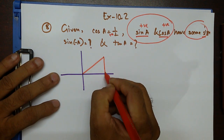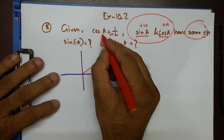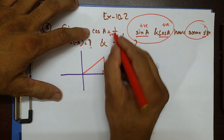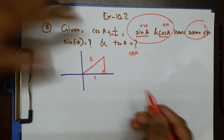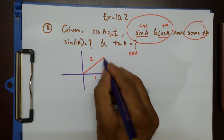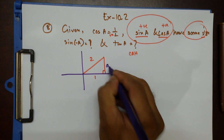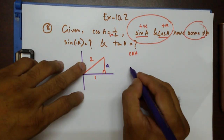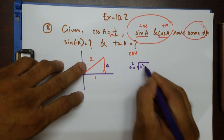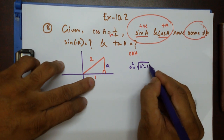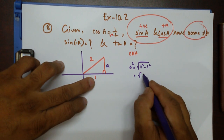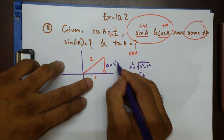We draw the right triangle. Cos a equals adjacent over hypotenuse, so that's one over two. We need to find the perpendicular using Pythagoras: hypotenuse squared minus adjacent squared gives four minus one, which is square root three. So the opposite side is √3.